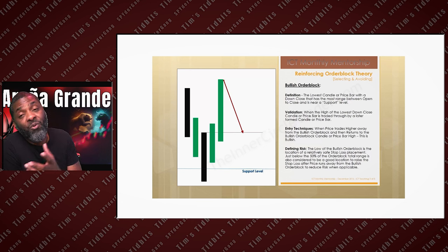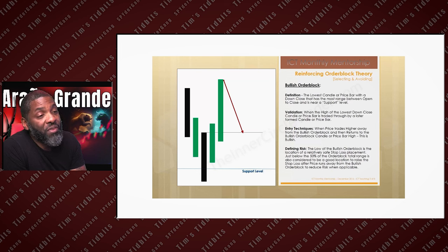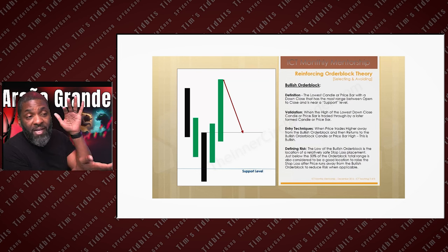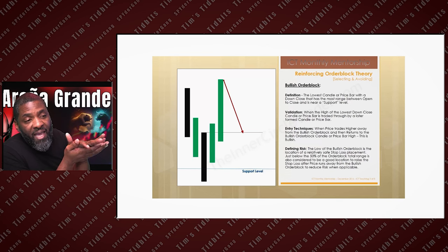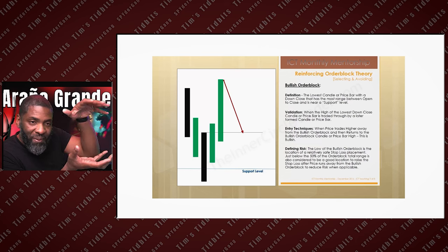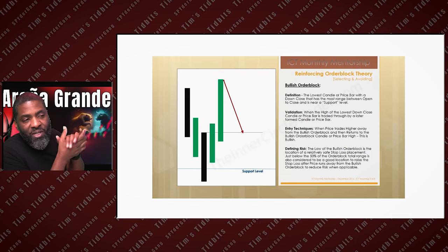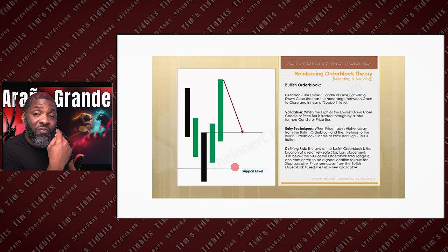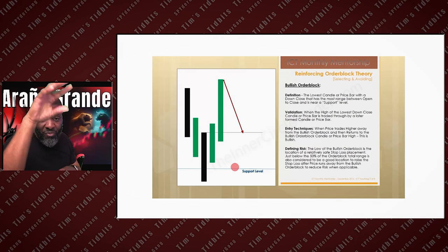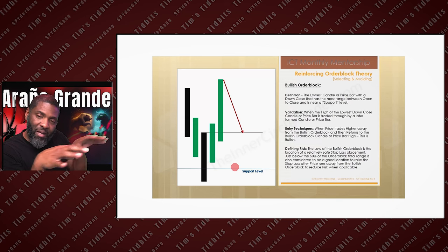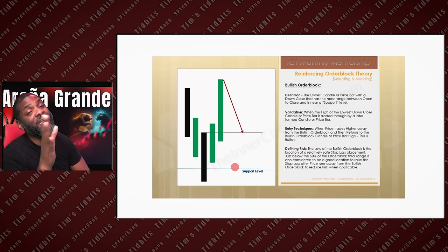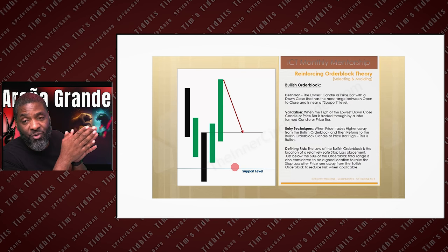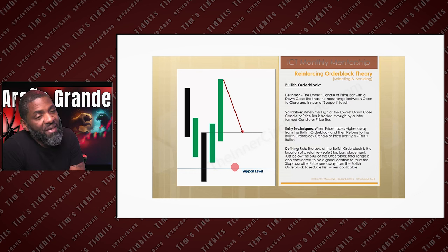Let's talk about a bullish order block: it's the lowest candle with a down close that has the most range between the open and close — a beefy candle — and is near a support level. There are two ways to find order blocks: one is when price is moving with displacement, and one is when it's coming out of consolidation. The consolidation version is more advanced, so right now we're just focusing on finding order blocks with displacement.